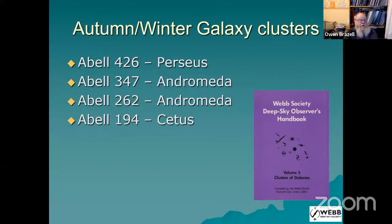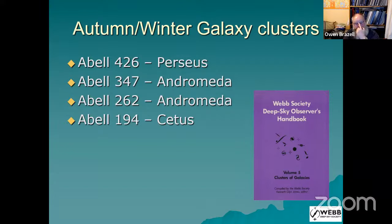These are the four clusters I'm going to look at this evening. The first three are all part of the Pisces-Perseus chain, and the last one — Abell 194 — is not part of it but is another very interesting cluster in the autumn skies. The best guide to these is still the Webb Society Deep Sky Handbook Volume 5, published in 1981, now over 40 years ago. There's really been nothing published since which covers galaxy clusters as seen with amateur-sized telescopes.